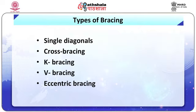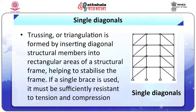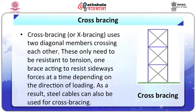Roof may also require bracing. Types of bracing include single diagonal, cross bracing, K bracing, V bracing, and eccentric bracing. Single diagonal triangulation is formed by inserting a diagonal structural member into rectangular areas of a structural frame to stabilize it. If a single brace is used, it must be sufficiently resistant to tension and compression. Cross bracing uses two diagonal members crossing each other, which only need to resist tension — one brace acting at a time depending on the direction of loading. As a result, steel cables can also be used for cross bracing.